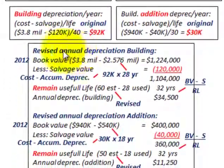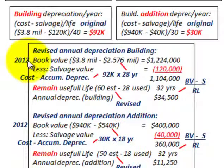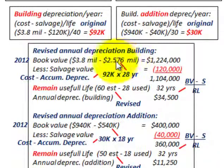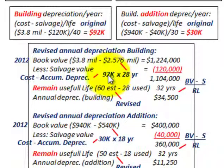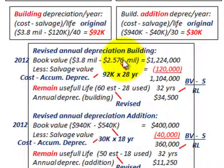Now for the revised annual depreciation on the building, we need to determine its carrying value at the time of the revised estimate in 2012. We take the original cost of $3,800,000 less accumulated depreciation to date: $92,000 per year times 28 years equals $2,576,000. Subtracting that from the cost of $3,800,000 gives us a carrying value in 2012 of $1,224,000.